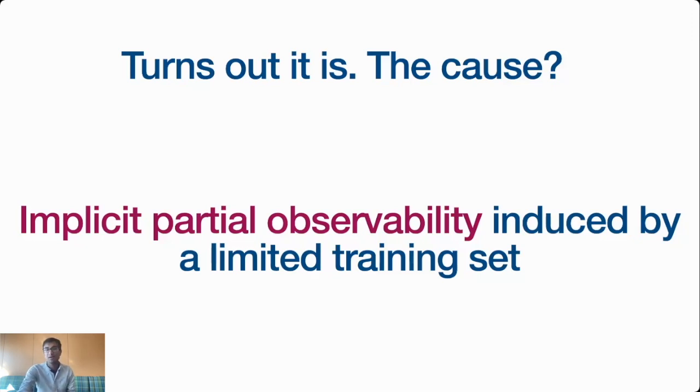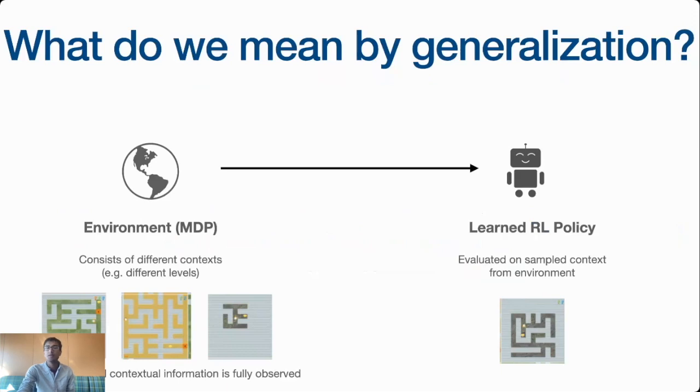But before we leap into why this happens, let's get grounded on what we mean by generalization. The typical RL loop involves an agent that interacts with an environment continually to maximize reward. Oftentimes in the real world, the environment has many contexts or different situations. For example, different levels in a video game, different mazes for a maze solving robot, different kitchens for a household robot. For this talk, we're going to assume that all contextual information is fully provided to the agent. For example, in the maze task, the agent gets to see the whole maze.